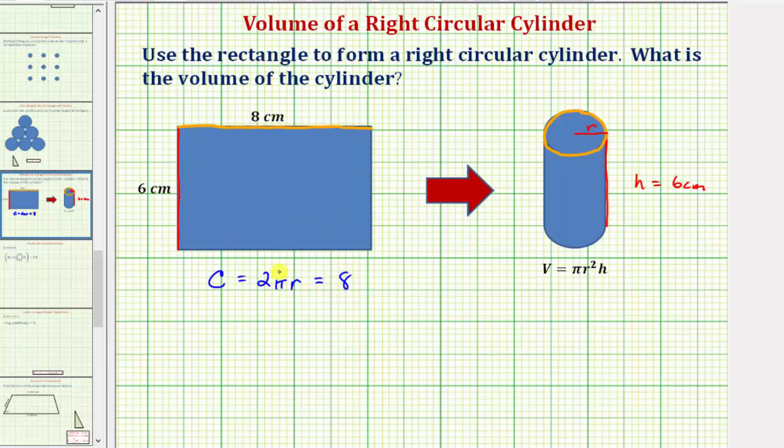And now to solve for r, we would divide both sides by 2π. Simplifying, we have r equals eight divided by two is equal to four. So the radius r is equal to four divided by π.